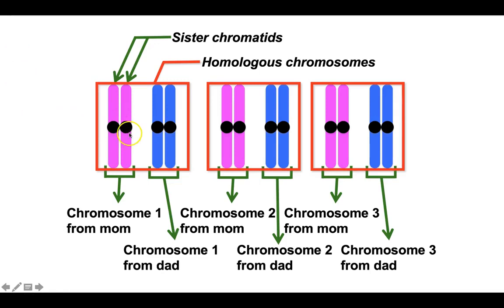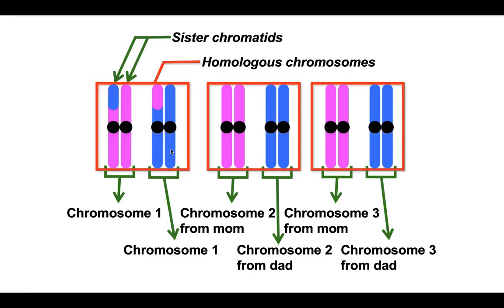During meiosis, shortly before cell division takes place, the chromosomes you inherited from mom and the chromosomes you inherited from dad double, because you're getting ready to make more cells. And then something strange happens.